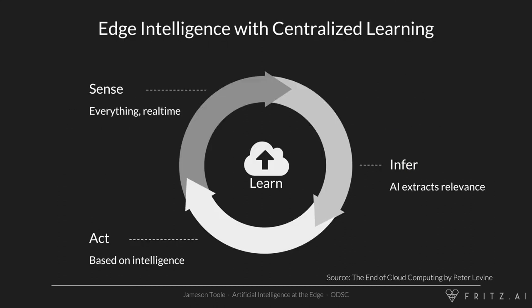I wanted to start by getting everyone on the same page, defining some terms, and talking about where I really think we're headed over the next five to ten years — towards a world with edge intelligence powered by centralized learning. We currently have sensors in everything: accelerometers, cameras, GPS in our mobile phones and all of these smart devices.